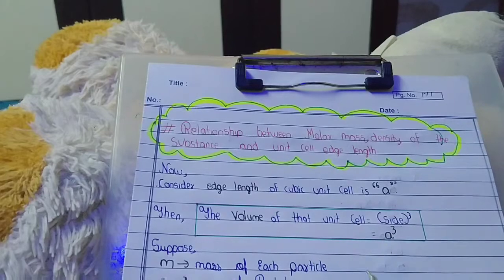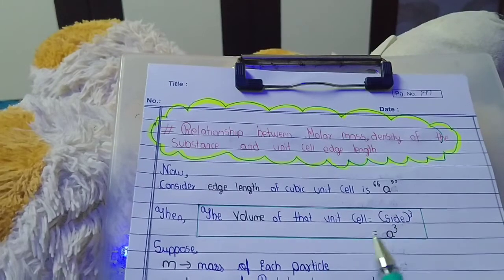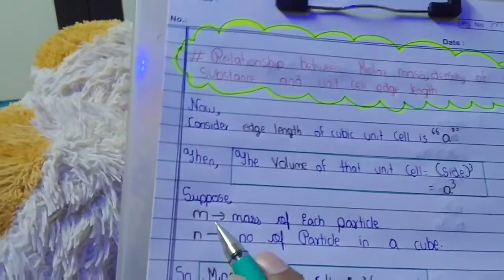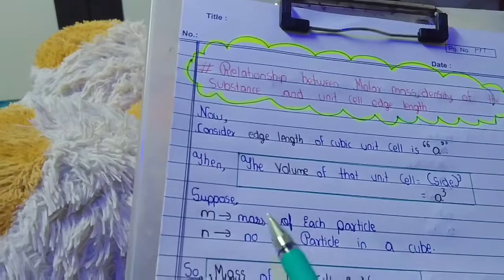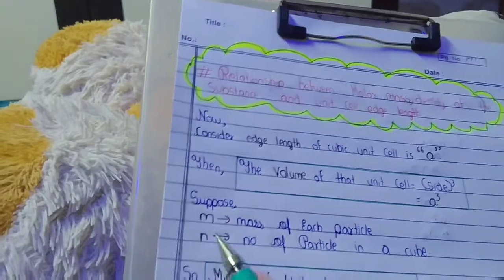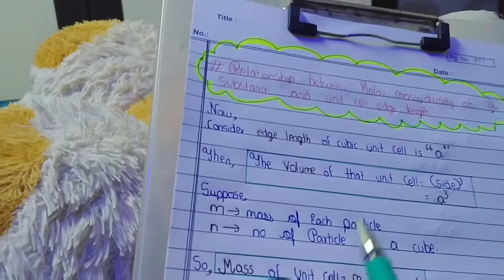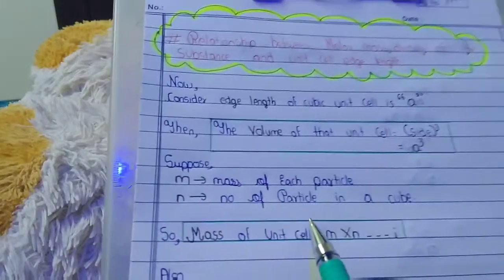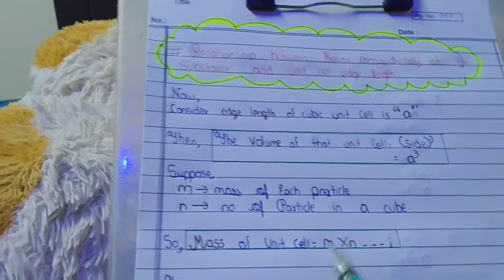Now we find the total mass of a unit cell. Let small m be the mass of an individual particle, and N be the total number of particles in the cube. Therefore, the total mass of the unit cell will be m multiplied by N.